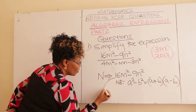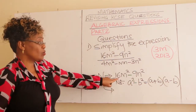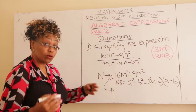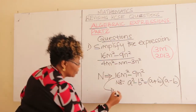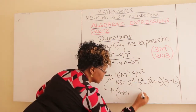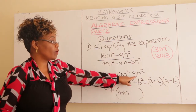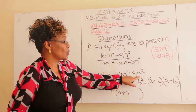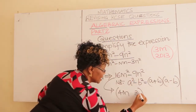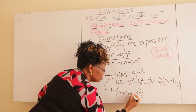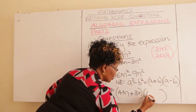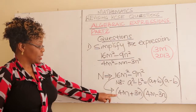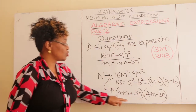So this one now gives you: square root of 16M squared is 4M; square root of 9N squared is 3N. In the first bracket, you add — giving (4M + 3N). In the second bracket, you write the same terms but subtract — giving (4M - 3N). So this is the factorization of the numerator.